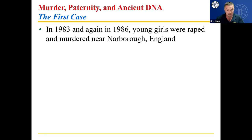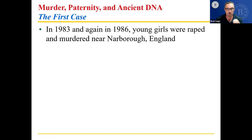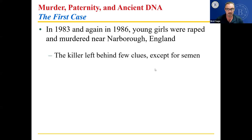Normally what they would do is gather samples — for example, semen from the bodies of the rape and murder victims. But the only thing they could really get back in those days was blood type. There are lots of blood types and lots of people share the same blood type, so you can't really nail down exactly who left the semen sample. The killer left behind few clues except semen.